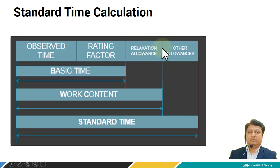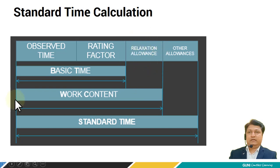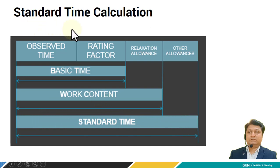Allowances such as relaxation allowance, contingency allowance, or other allowances are added. If we add the relaxation allowance, which is in the range of 20%, then we get the work content. And if we add other allowances as necessary, then we will get the standard time. This chart shows how standard time can be calculated.